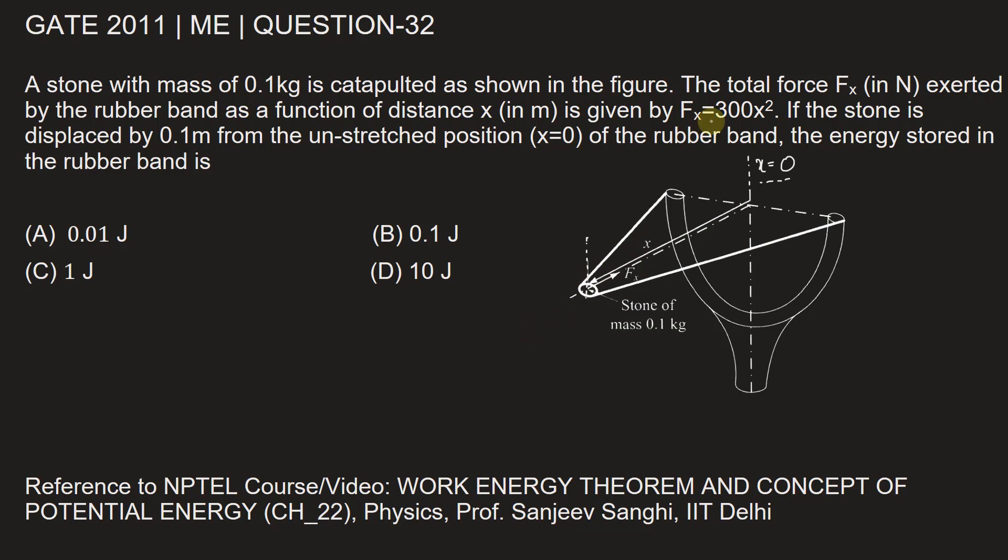The force applied is itself a function of x, that is the distance. So we can write Fx being itself the function of x: 300x². It is not a numerical value, a fixed constant value, but it is a function of the distance x. So as x changes, the force also keeps on increasing. We can see here that as x increases, force also increases. Now we need to find out the energy stored in the rubber band.